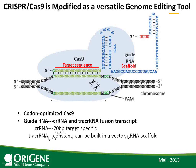The crRNA is the 20 base pair target-specific RNA; the tracrRNA is shown here in green and blue — that is one guide RNA. The green part is the target-specific portion, and the blue part is the tracrRNA portion, also called the guide RNA scaffold. Cas9, the green protein, is the nuclease. After the guide RNA directs Cas9 to the genome, Cas9 causes a double-strand break.